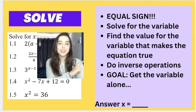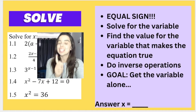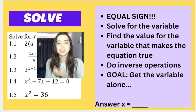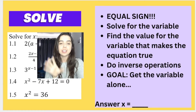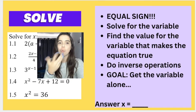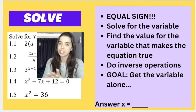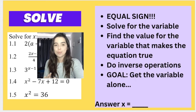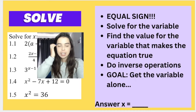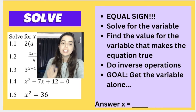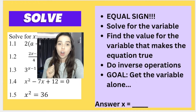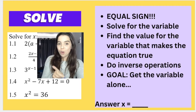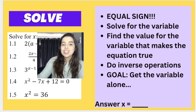Remember, you will solve if you see an equal sign. If you are given an equation with an equal sign and they say solve for x, or solve for a, or get the value of x, then you know you are solving. You're finding the value for that variable that makes that equation true. Our goal is to get the variable alone and get an answer like x equals something. To solve, we do inverse operations.